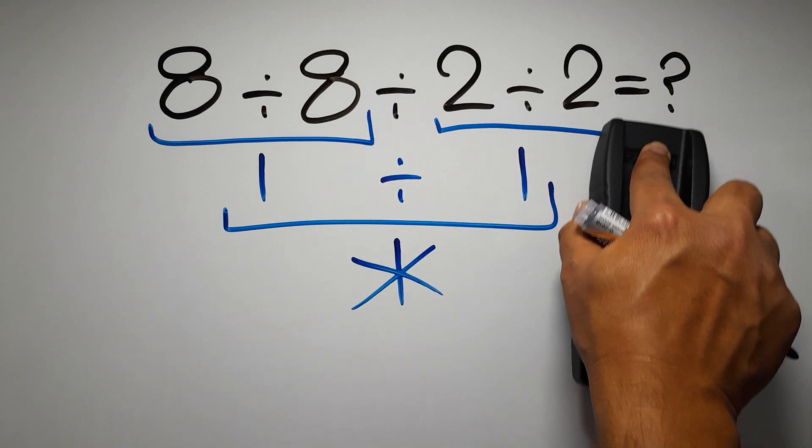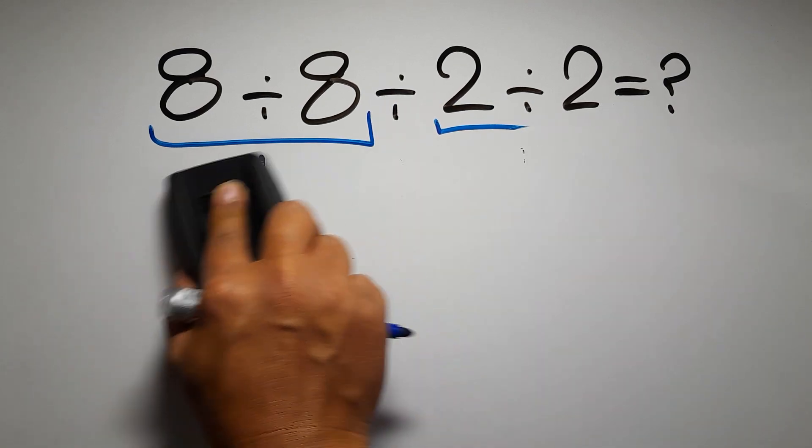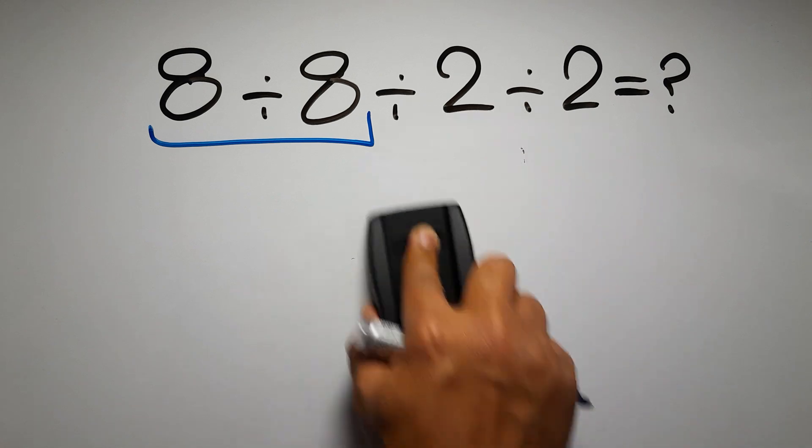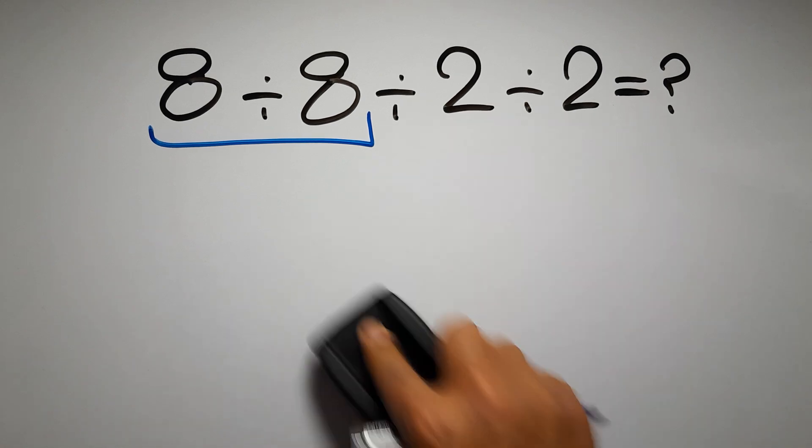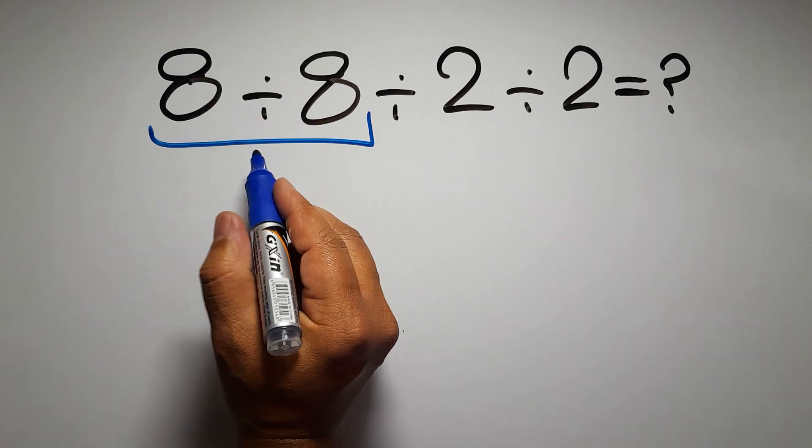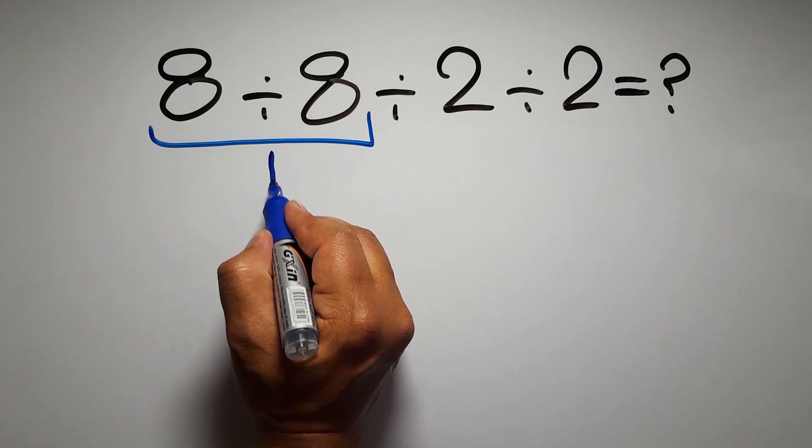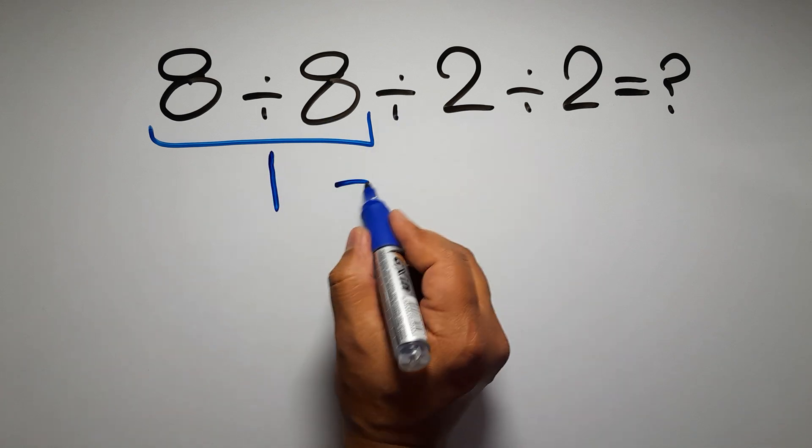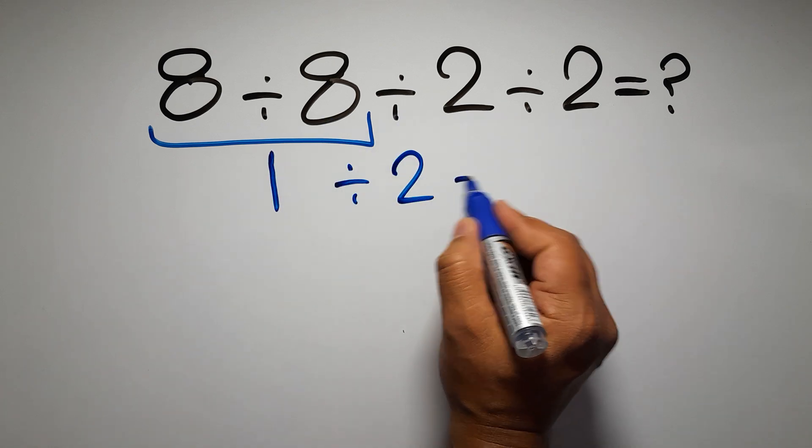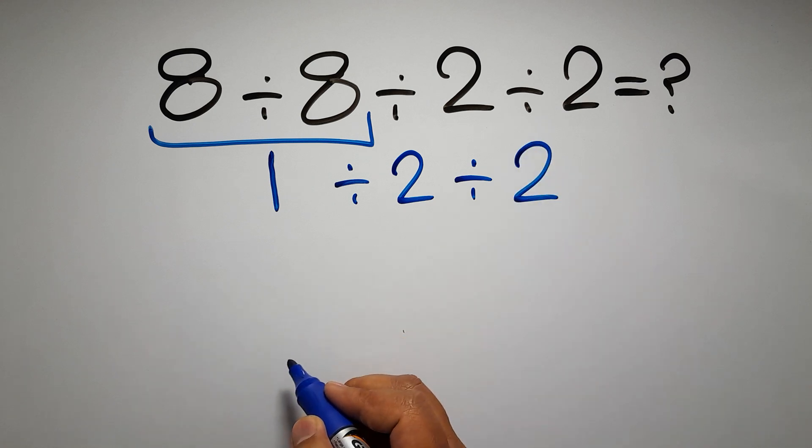So first this division. 8 divided by 8 is just 1, so 1 divided by 2, and again divided by 2. No...